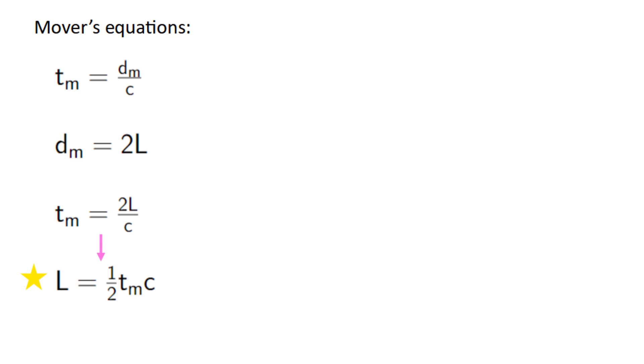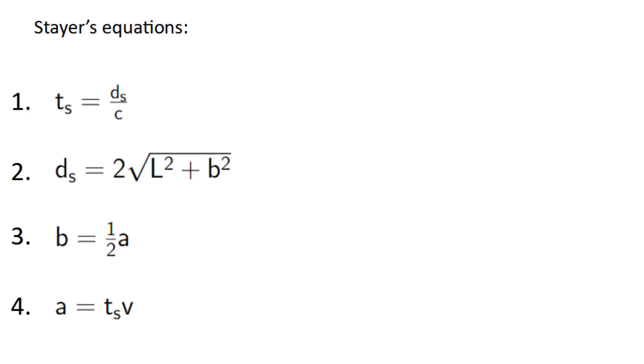Then we have to do a similar thing with the stayer's equations. First, we substitute the fourth equation into the third, giving us b equals one half ts v. Then we substitute that into the second equation.